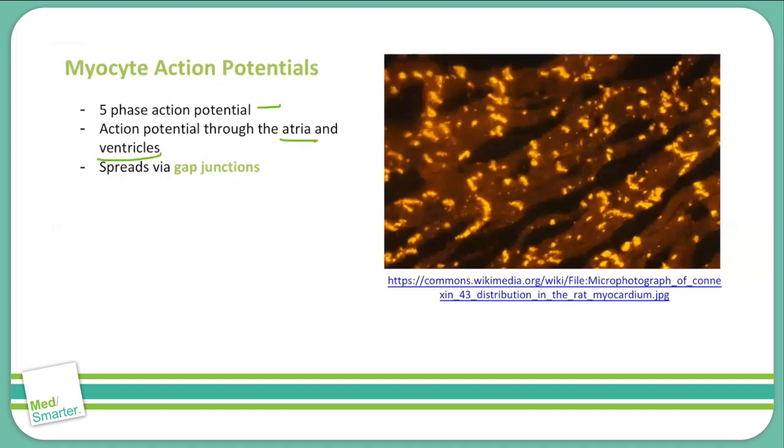Action potentials spread from myocyte to myocyte by gap junctions. Gap junctions are pores in between the myocytes that allow ions like sodium to flow from cell to cell directly without leaving the membrane. This is important in the heart because it allows for a synchronized contraction, as opposed to skeletal muscle in which muscle fibers are activated and contract individually.